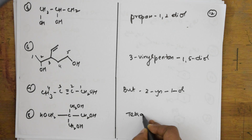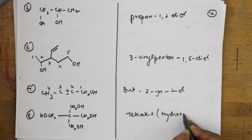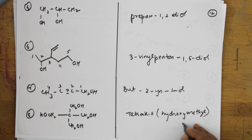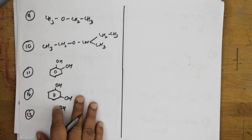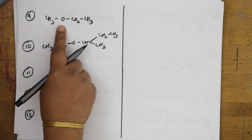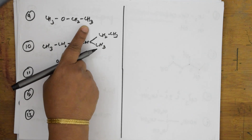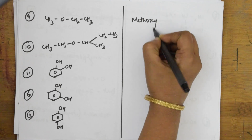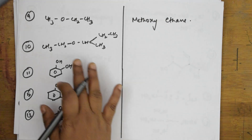For a carbon with four hydroxymethyl groups attached, you have four hydroxymethyl groups and one central carbon atom, so the parent is methane. This compound is tetra(hydroxymethyl)methane. For a simple ether with a methyl group and an ethyl group, you name it methoxyethane.